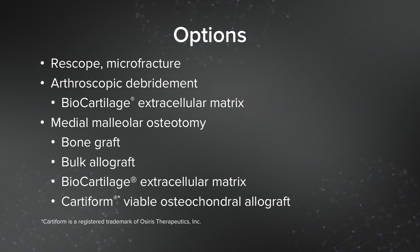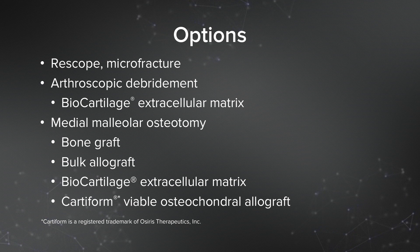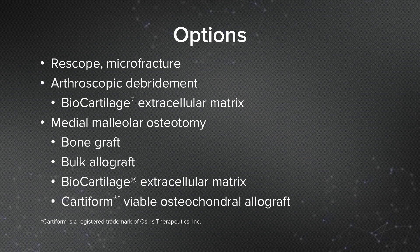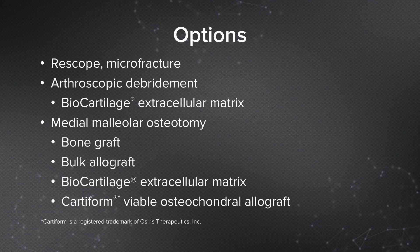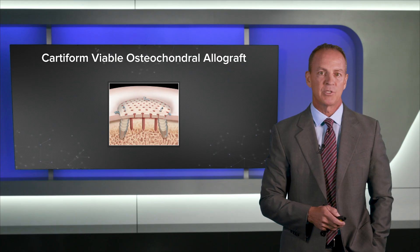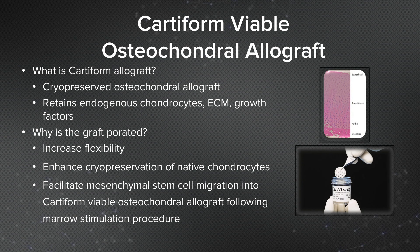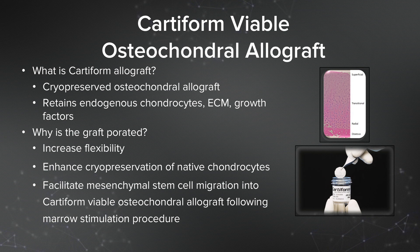But in this case, given the size of that lesion, I decided he needed more. The other options were an arthroscopic debridement and placement of BioCartilage — maybe BioCartilage with bone marrow aspirate concentrate — or we could do a medial malleolar osteotomy and do some type of bulk allograft or bone graft the lesion and place BioCartilage. Or lastly, we could use Cartiform, which is a viable osteochondral allograft supplied by Arthrex.